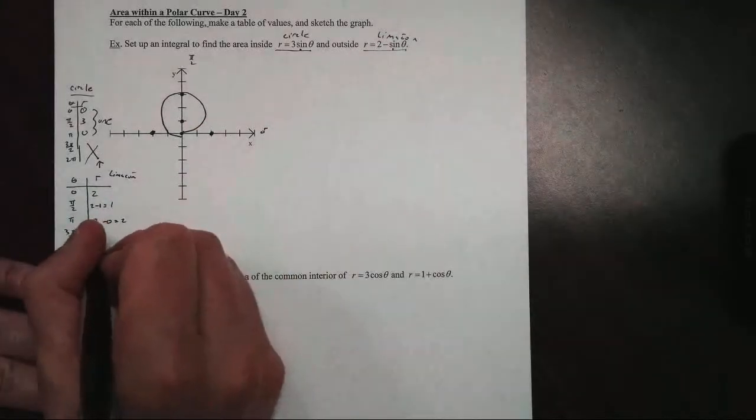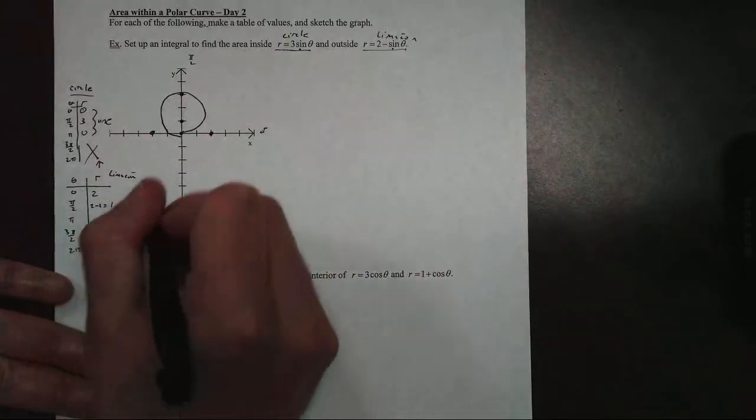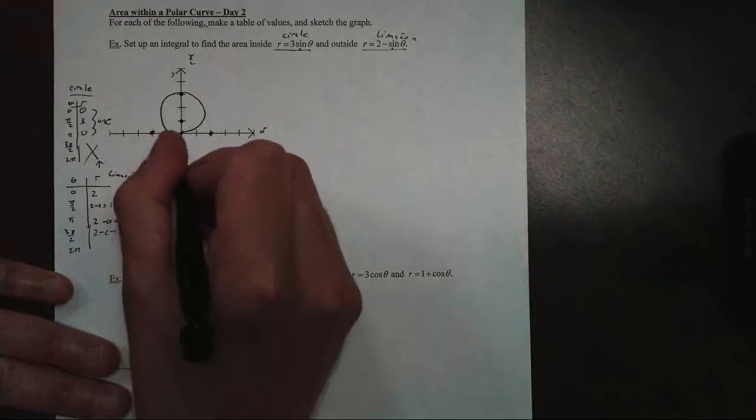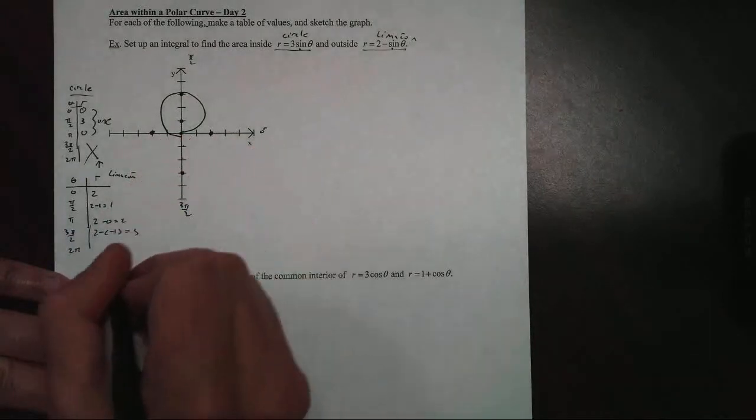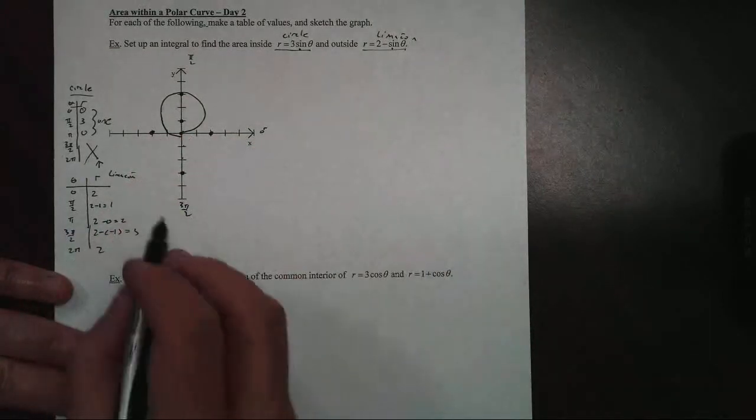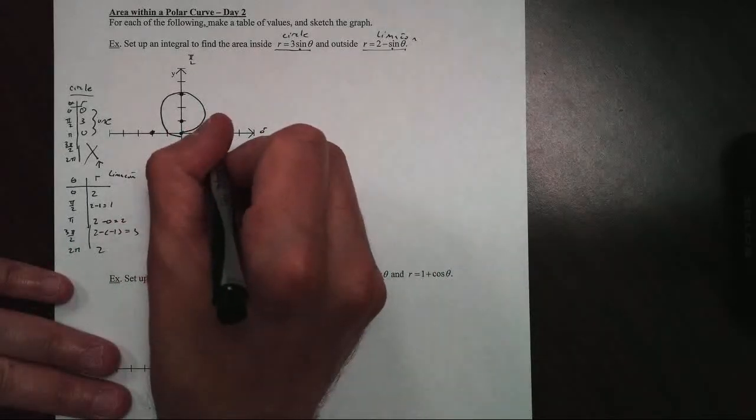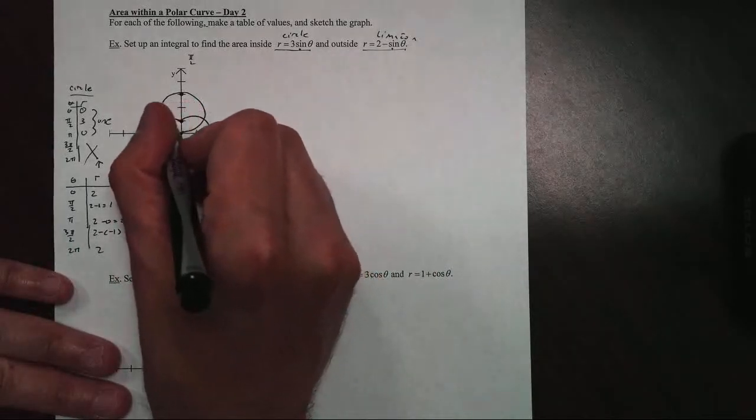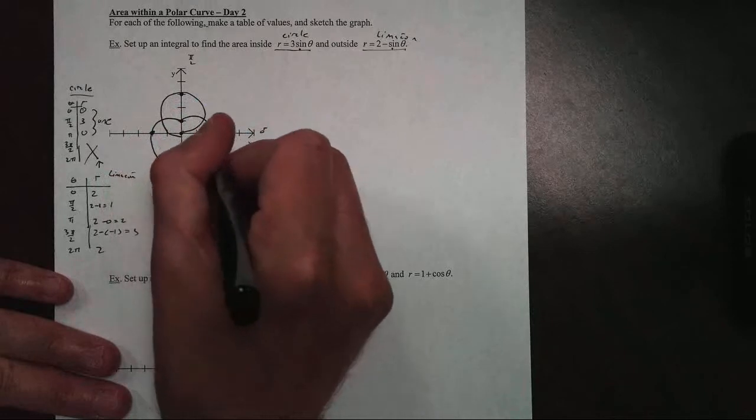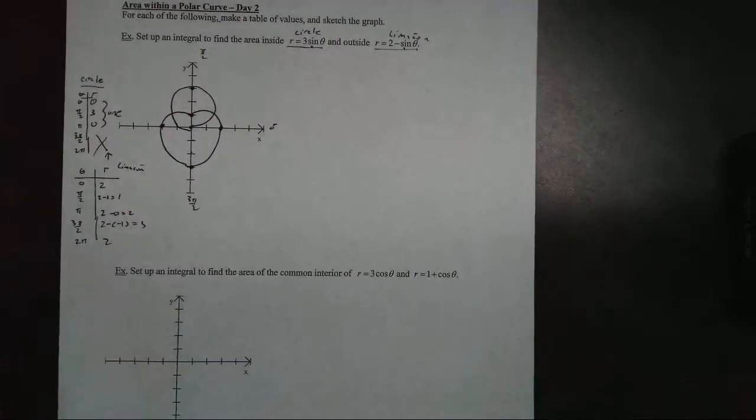When I plug in three pi over two, I get two minus a negative one, which becomes three. So at three pi over two, we're down three—one, two, and three—and we're back to two. So when we graph our function, we get a dimpled limacon, kind of like so. And there we have it.